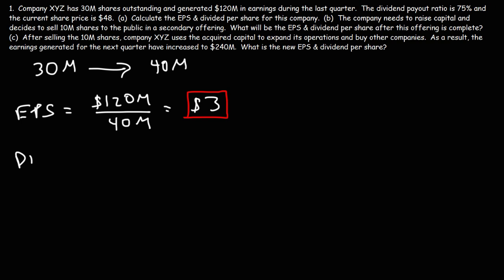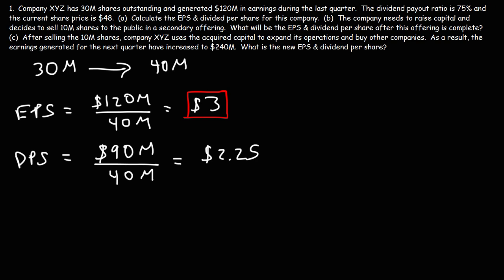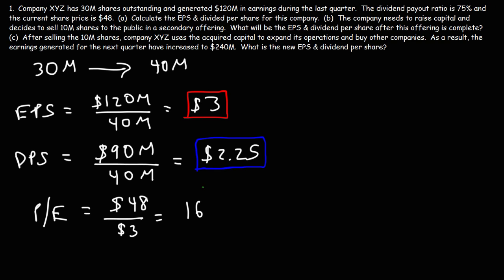Now let's calculate the dividend per share, or DPS. The amount the company is giving out in dividends is still $90 million — still 75% of the total earnings. If we divide 90 by 40, the DPS value decreased as well, going down from $3 to now $2.25. And now the P/E ratio: the price of the stock is $48 divided by the new EPS of $3, giving a P/E ratio of 16. So the P/E ratio went up as shares outstanding increased.